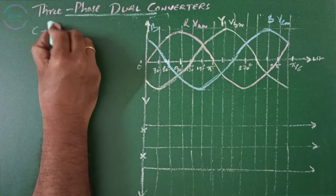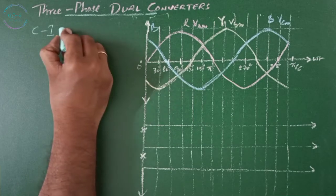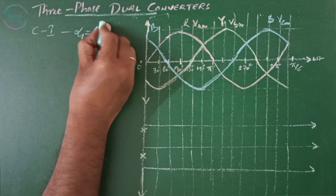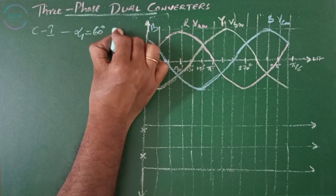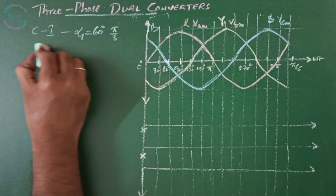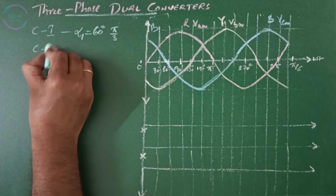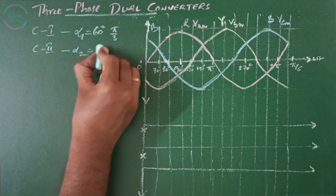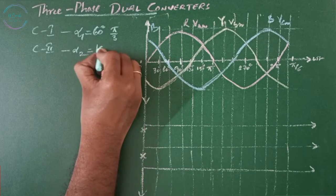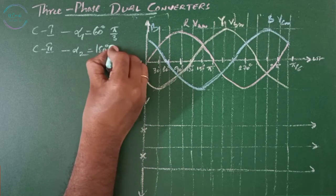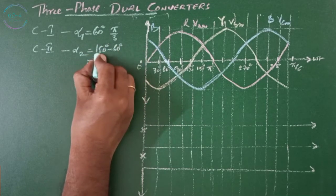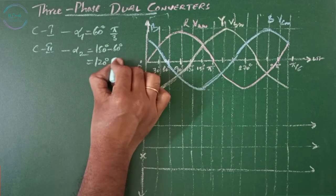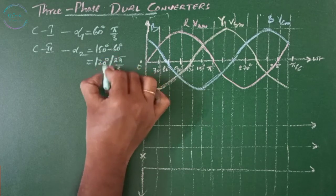If converter 1 is operated with delay angle alpha 1 equals 60 degrees (pi by 3), then converter 2 should be operated at alpha 2 equals 180 minus 60 degrees, which is 120 degrees or 2 pi by 3.